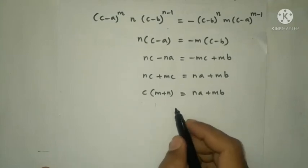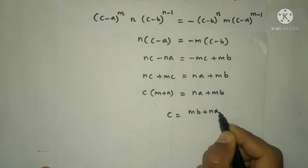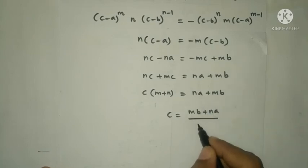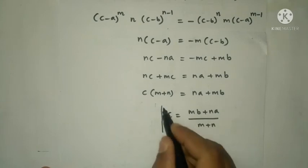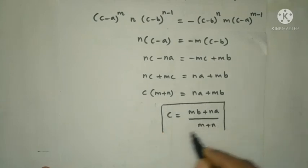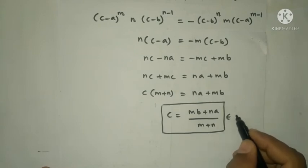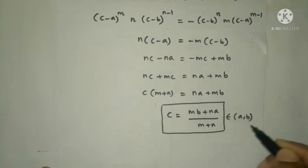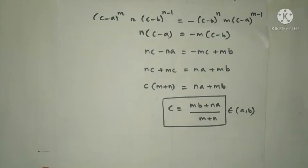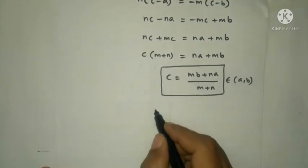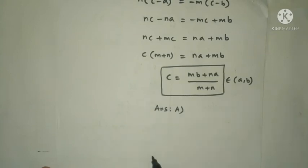So c = (mb + na)/(m + n). This is the Rolle's theorem c value, which belongs to the open interval (a, b). The answer is option A.